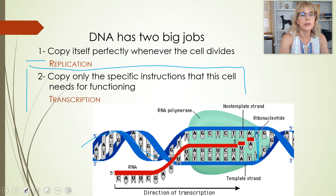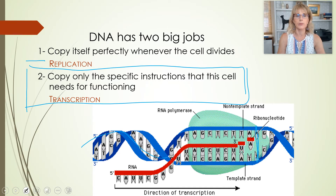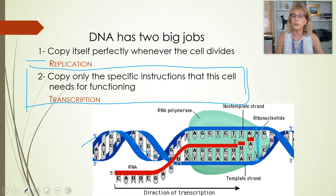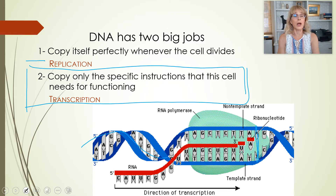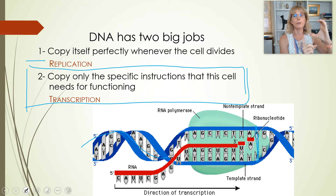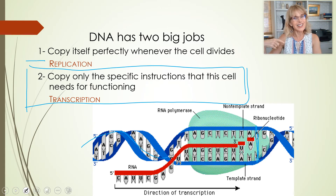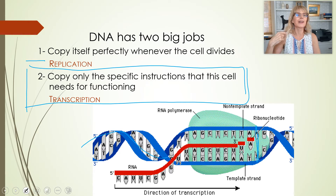Now we're talking about transcription. Out of all those millions of base pairs, DNA has got small segments called genes. Those segments called genes are the instructions for making one protein — technically a little more complicated, but we won't go into it. So if you have a gene for brown pigment in your eyes, that means you have a small segment of one of your chromosomes with instructions for a protein that makes brown pigment. I've got blue eyes, which means my gene for that same protein has a mutation in it.